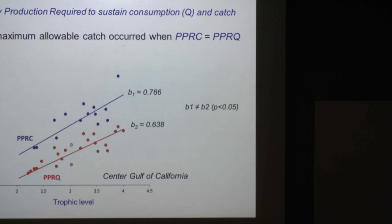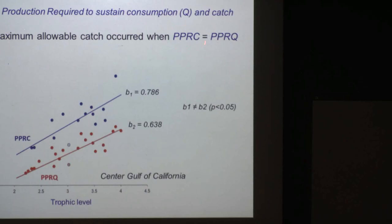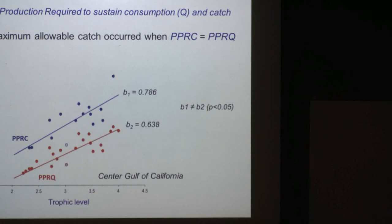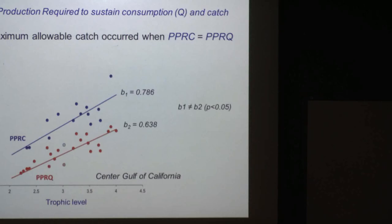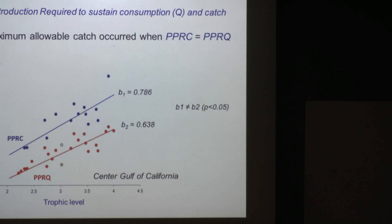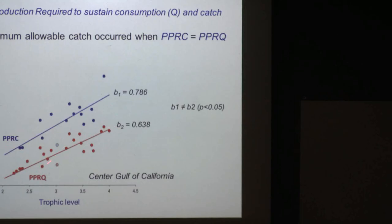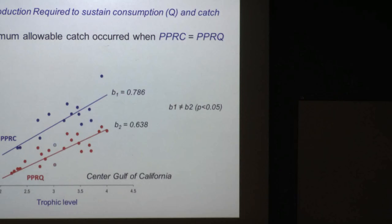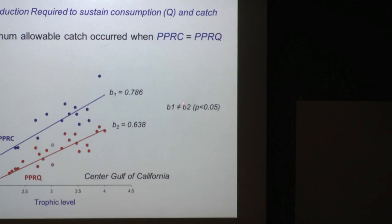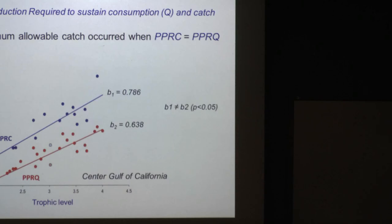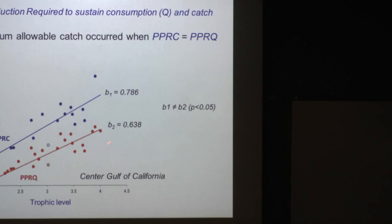We approach this balanced catch in a different way, using the primary production required to sustain catch and to sustain consumption. The idea is that if the slopes are the same, we could be under the concept of balanced catch. In this case, the slopes are significantly different — meaning we need to adjust some of these rates to compensate and get similar primary production required.